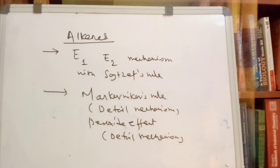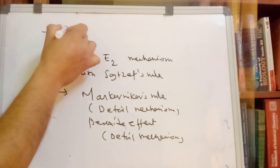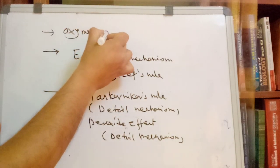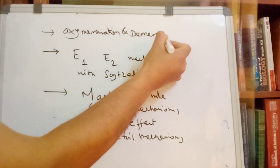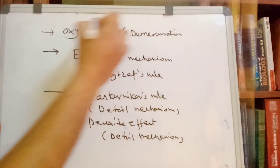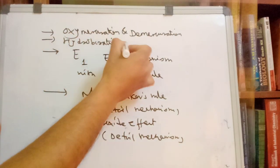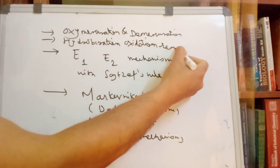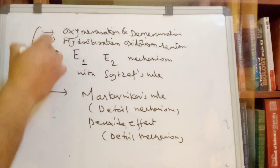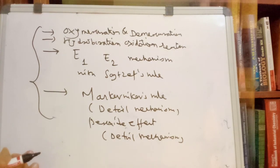In the Alkyne and Alcohol chapters, the most important reactions include oxymercuration-demercuration and hydroboration-oxidation reaction. You need to know the mechanism for all these reactions. We are focusing on the Alcohol and Ethers chapter, Alkyne chapter, and the Structure and Properties chapter.